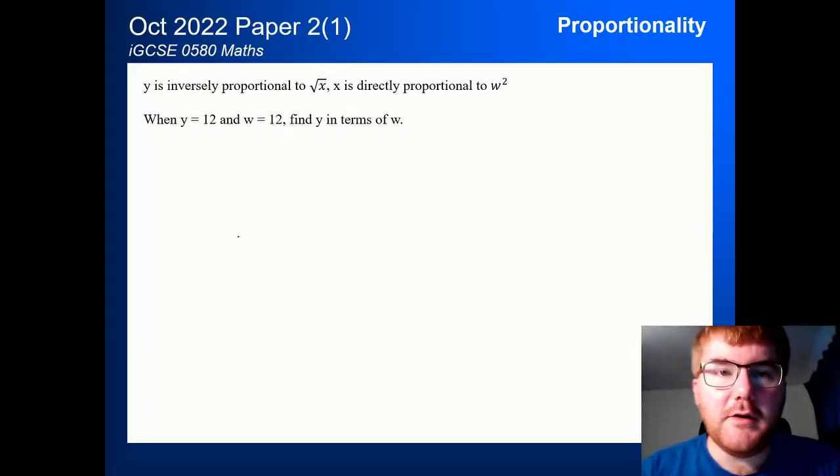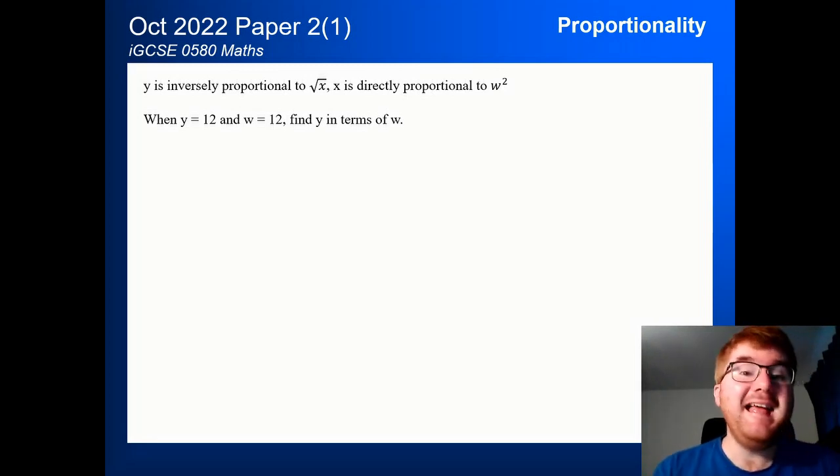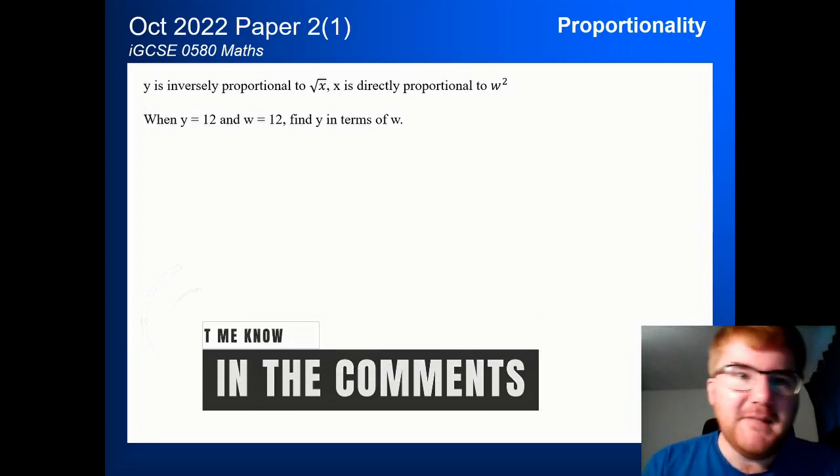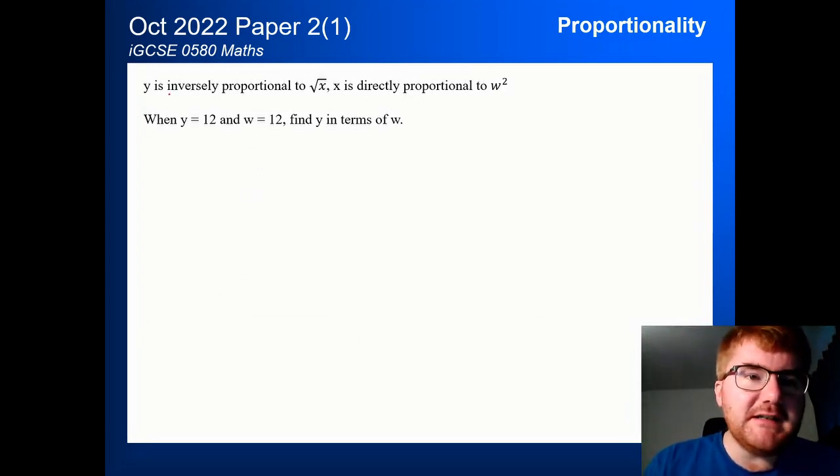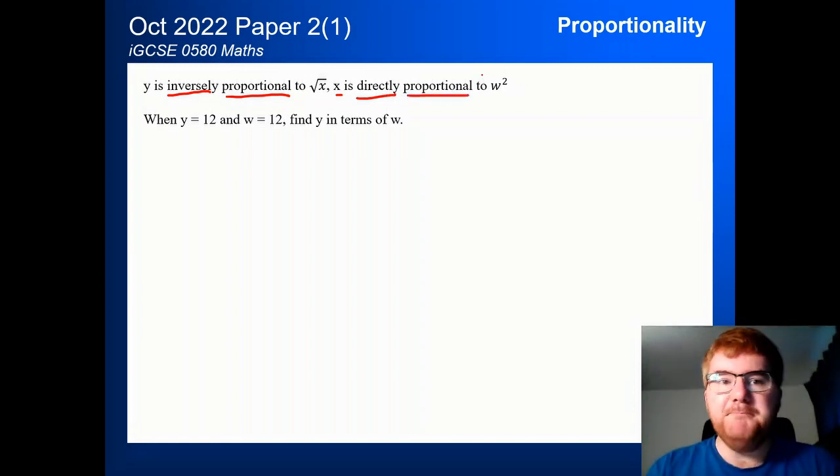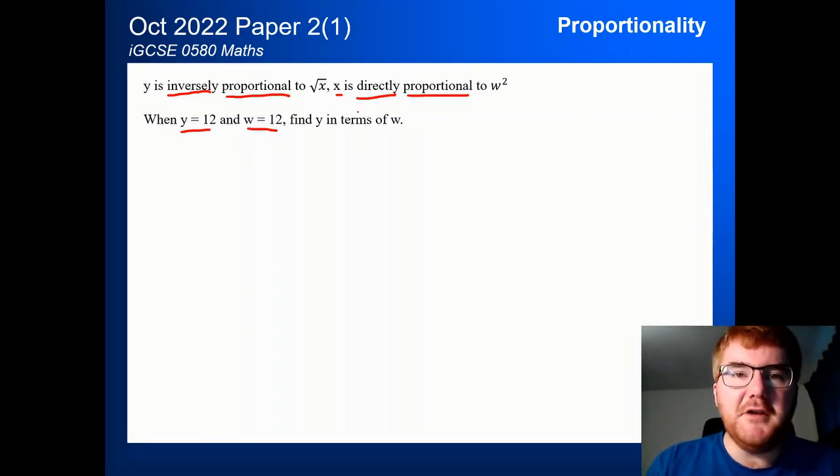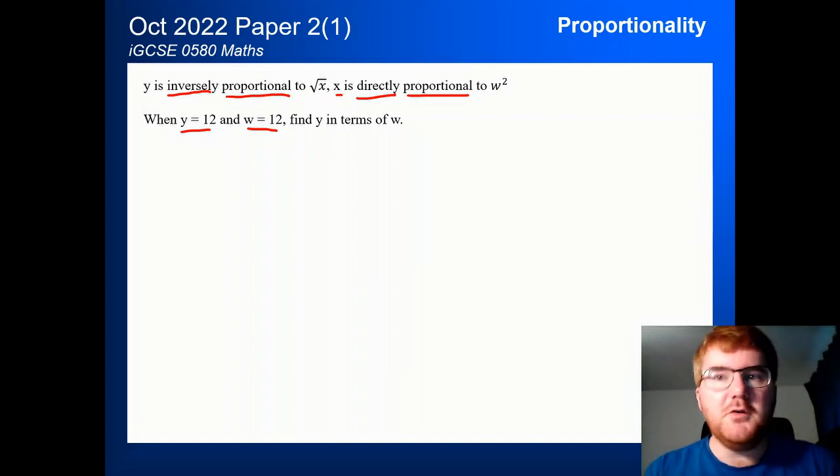OK, so this is the question that you've shared with me. If you disagree on this, then please let me know in the comments below whether you have a different question you want me to go through. So y is inversely proportional to the root of x and then x itself here is directly proportional to w squared. And you're given some conditions here. So y is 12 and w is 12 and then we need to find y in terms of w. So again, it's one of these little twists that they're doing on these proportion questions as students get better and better at it.